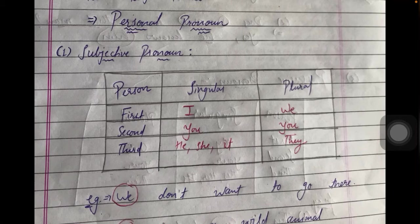For second person — the person spoken to — whether singular or plural, we apply 'you.' For third person in subjective pronoun, we use 'he' for a boy, 'she' for a girl, and 'it' for animals, birds, or non-living things in singular form. If it is in plural form, we apply 'they.'